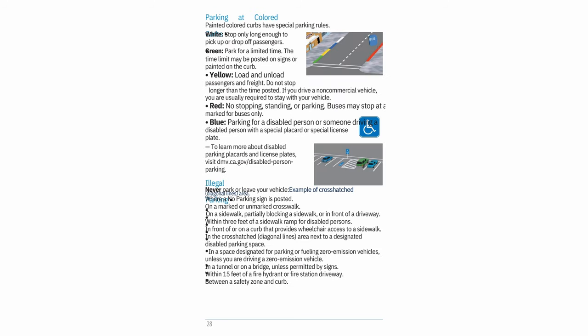Parking at colored curbs: White — stop only long enough to pick up or drop off passengers. Green — park for a limited time (time limit may be posted on signs or painted on the curb). Yellow — load and unload passengers and freight; do not stop longer than the time posted; if you drive a non-commercial vehicle, you are usually required to stay with your vehicle. Red — no stopping, standing, or parking. Blue — parking for a disabled person or someone driving a disabled person with a special placard or special license plate.